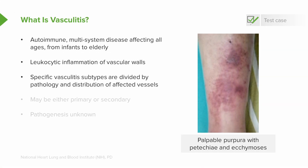Next up, remember that all the specific vasculitis subtypes are divided based on the pathology found under biopsy and the distribution of the affected vessels — where the lesions are occurring: small, medium, or large. Another factor is that most vasculitides are primary, but a number can occur secondary to other disease processes. And lastly, all of them are completely idiopathic — we don't really know what causes them, though we know many things associated with particular subtypes.